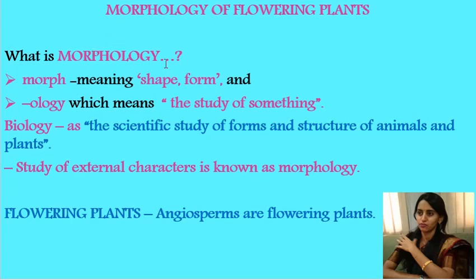What is Morphology? The term morphology is derived from Greek. 'Morpho' means shape or form and 'Logos' means the study of something. In biology, we can define morphology as the scientific study of forms and structures of animals and plants. In simple words, the study of external characters is known as morphology.